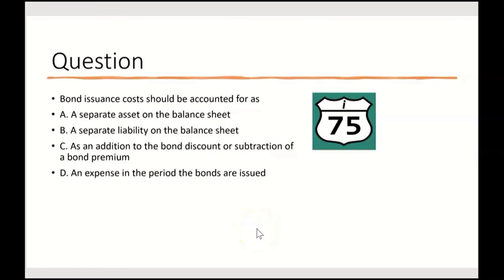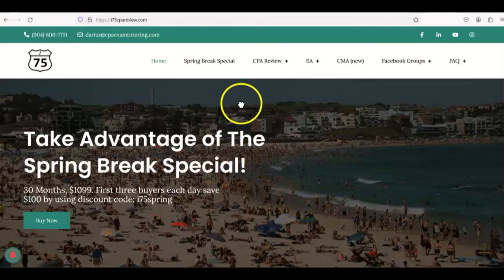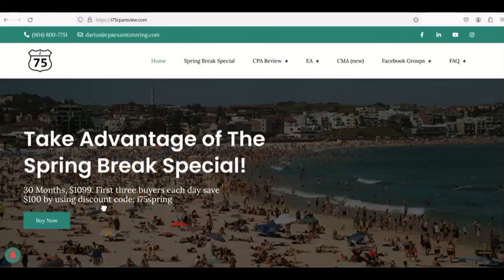Second question: bond issuance costs should be accounted for as — A: a separate asset on the balance sheet; B: a separate liability on the balance sheet; C: an addition to the bond discount or subtraction from the bond premium; D: an expense in the period the bonds are issued. If you think you know, leave the answer in the comments. Remember to like and subscribe — it really helps the channel. For more help with bonds or any part of the exam, go to i75cpareview.com. The right teacher makes all the difference.